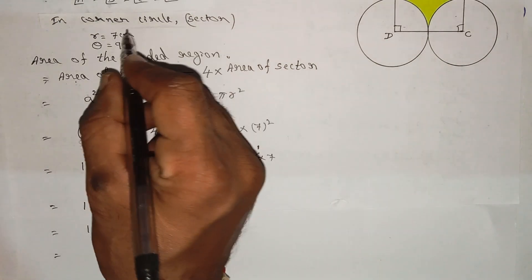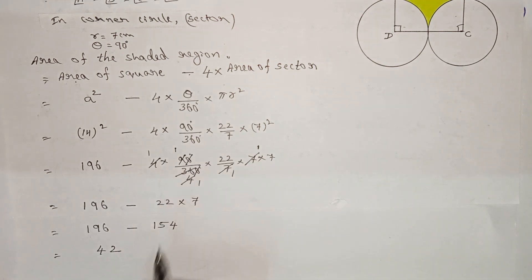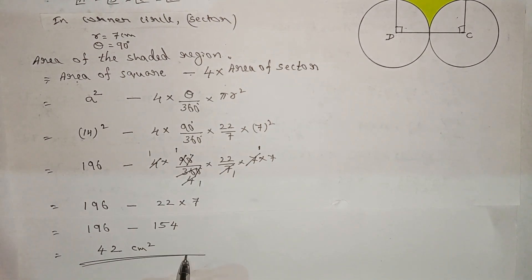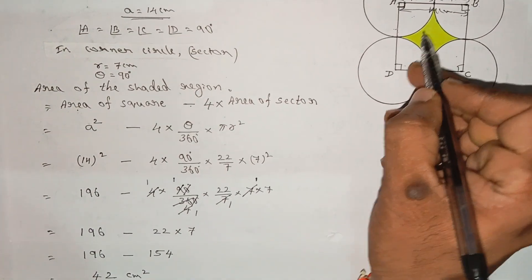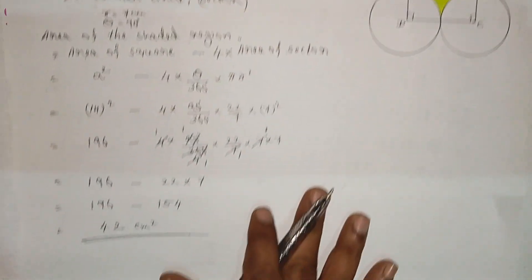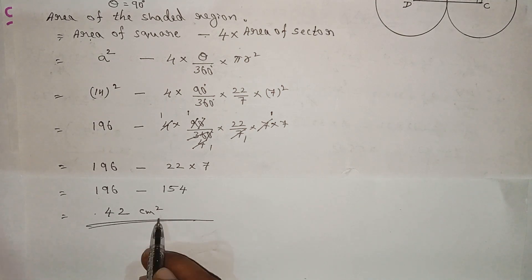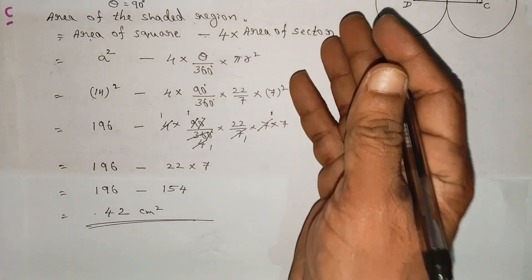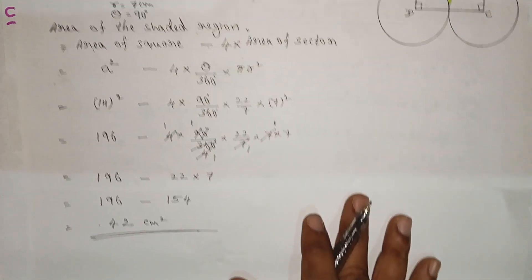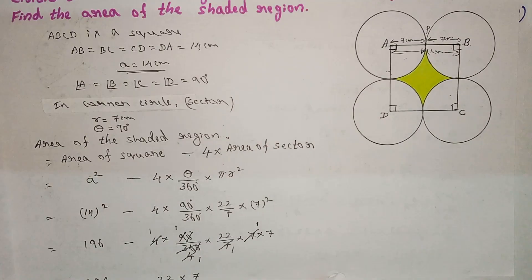Radius is 7. The area of the shaded region is 42 square centimeters. This completes the 7th problem.